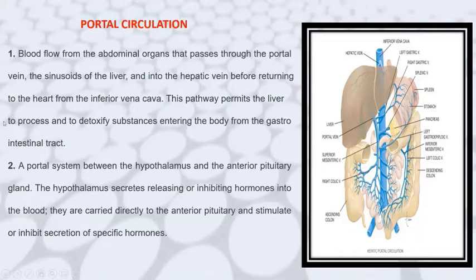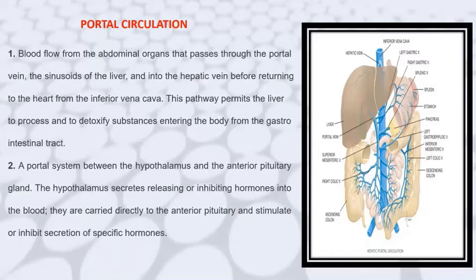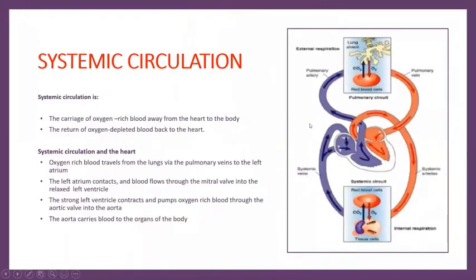This pathway permits the blood to be processed and to detoxify substances entering the body from the gastrointestinal tract. There is also a portal system between the hypothalamus and the anterior pituitary gland, where the hypothalamus secretes releasing or inhibiting hormones carried directly to the anterior pituitary to stimulate or inhibit secretion of specific hormones. The portal circulation is thus under hormonal control of the hypothalamus and anterior pituitary.